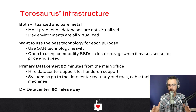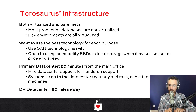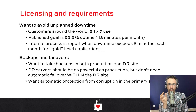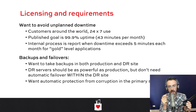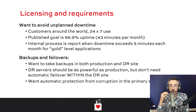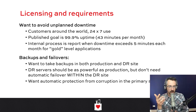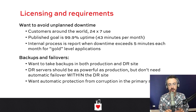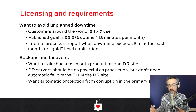They have data centers nearby each other and are used to doing synchronous writes across them, with a big fat network between the two data centers. They want to avoid unplanned downtime — this is the kind of company that does post-mortems whenever there's a failure. If a server has been down more than five minutes in a month, they get together, do an autopsy, and write up what they could do better. They want automatic protection from corruption in the primary data center, but are less worried about the DR data center.